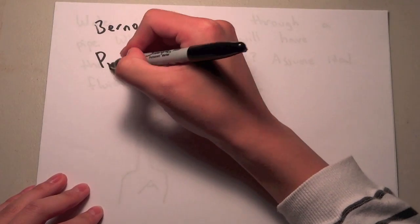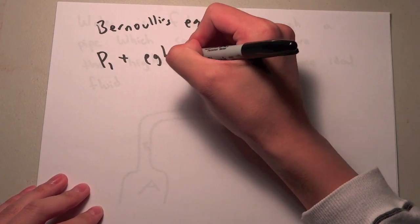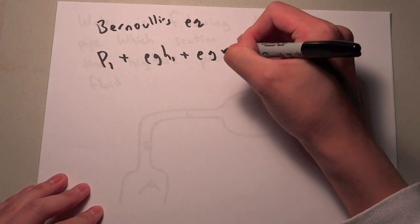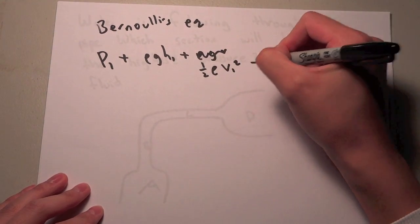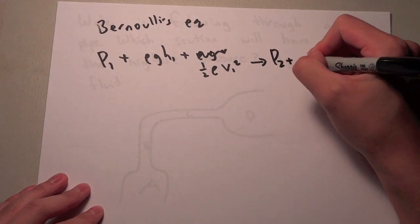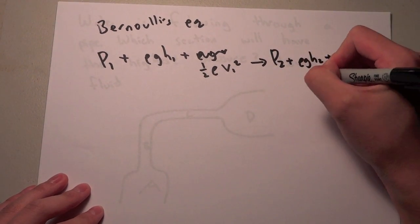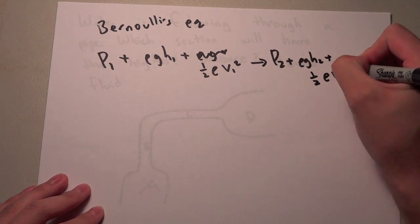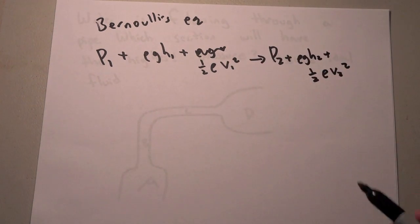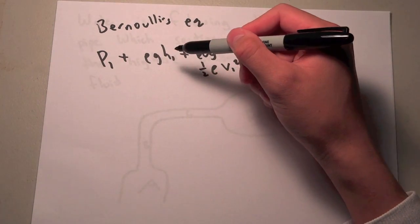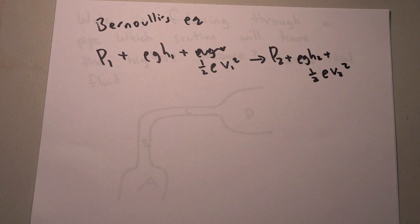And what is that? That's P₁ plus ρgh₁ plus one-half ρv₁² equals P₂ plus ρgh₂ plus one-half ρv₂². So what this is saying is pressure plus the potential energy plus the kinetic energy is conserved. And so ρ is the density of the liquid, h is the height, and v is the velocity.